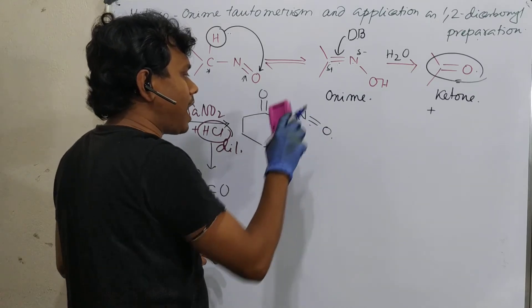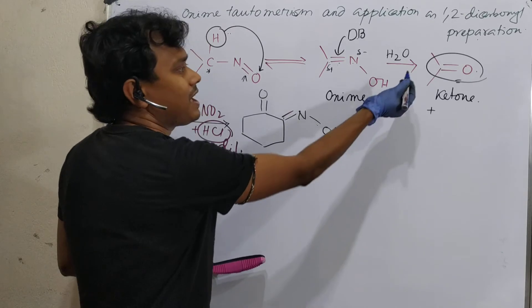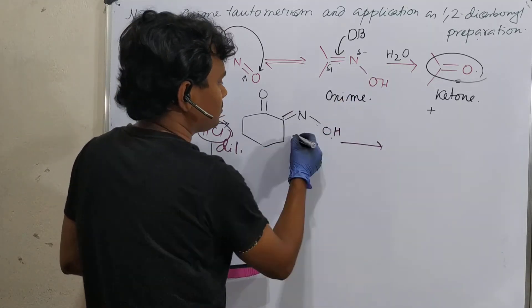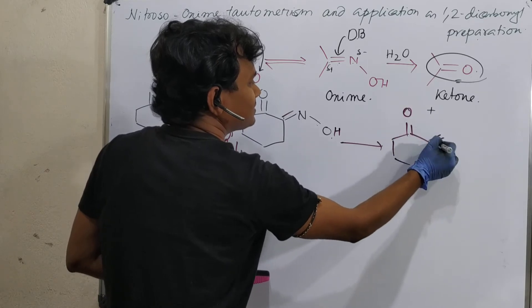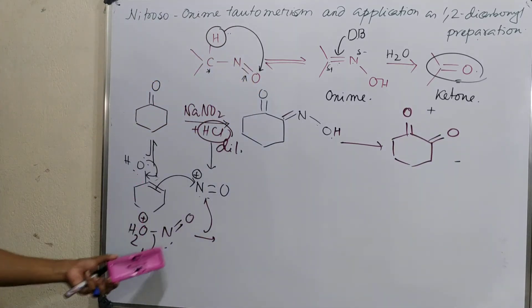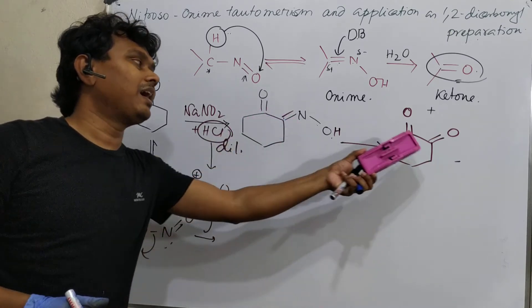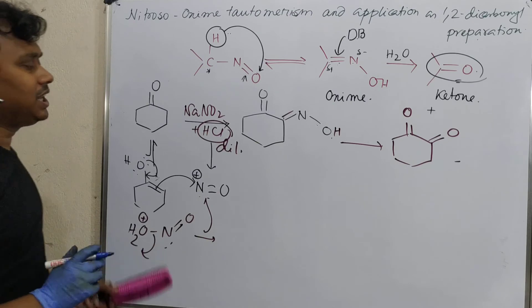Now what is expected that after this proton shifting, it will result this. This. See, this is actually 1,2-dicarbonyl thing. So what is the understanding? First of all, enolization is nucleophilic attack. Hydrolysis results in 1,2-dicarbonyl.